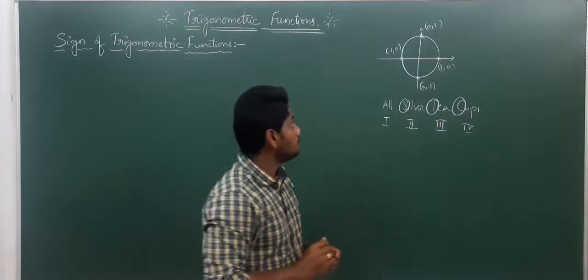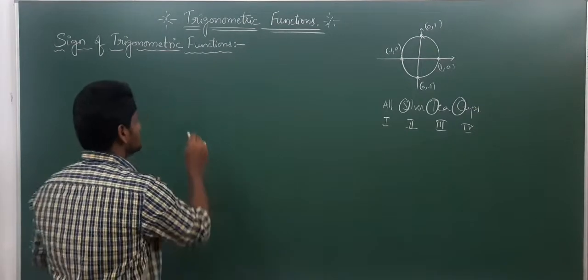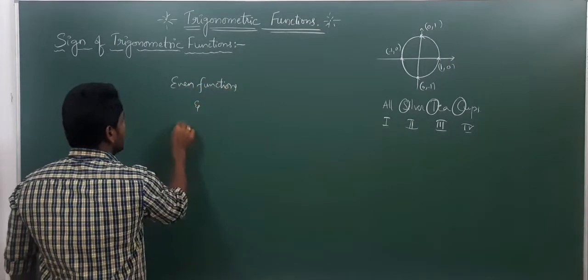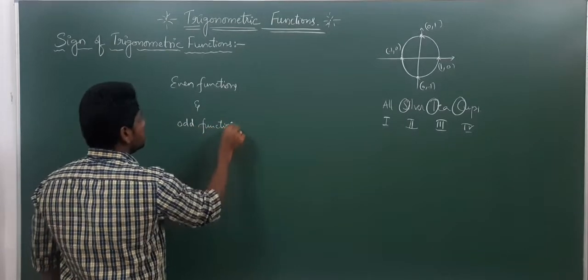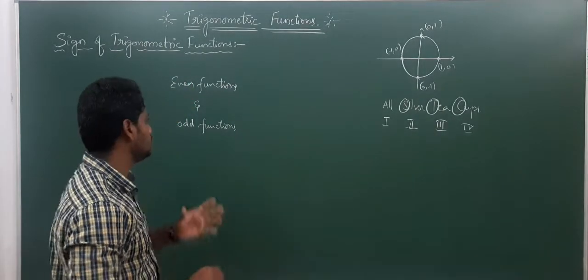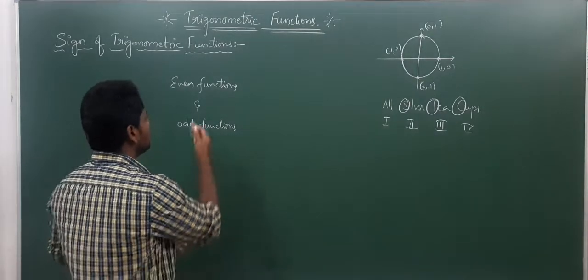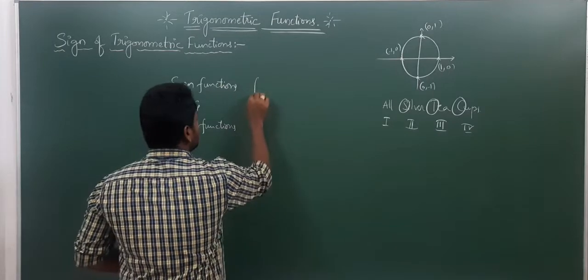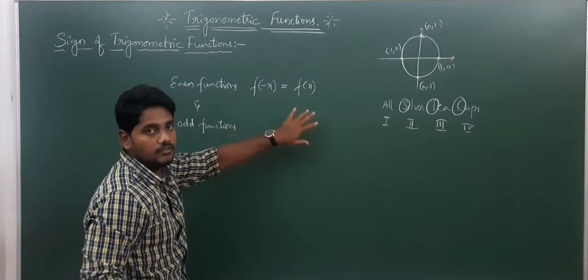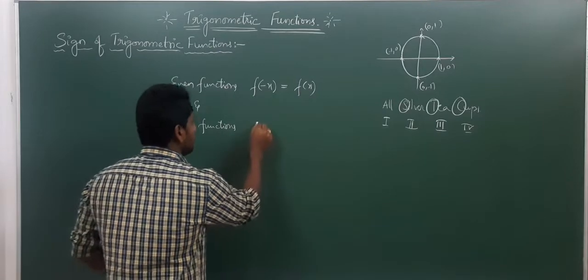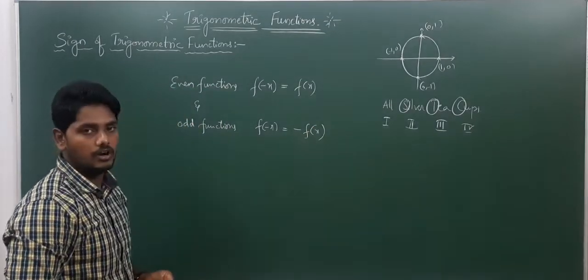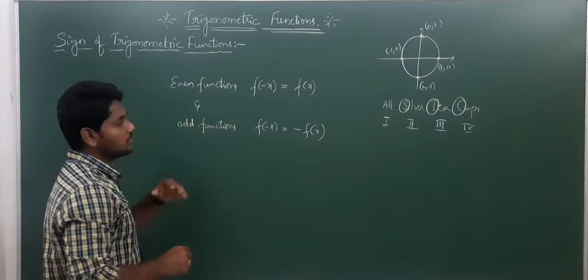Now when it comes to even functions and odd functions — out of the six trigonometric functions: sine, cos, tan, cot, secant, and cosecant — which are even functions and which are odd functions? If f of minus x equals f of x, we consider it an even function. In odd functions, f of minus x equals minus f of x.